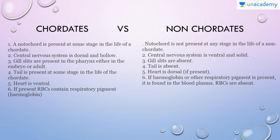Now let us talk about the differences. The notochord is present at some stage in chordates, whereas in non-chordates the notochord is absent. The central nervous system is dorsal and hollow in chordates, whereas in non-chordates the central nervous system is ventral and solid.